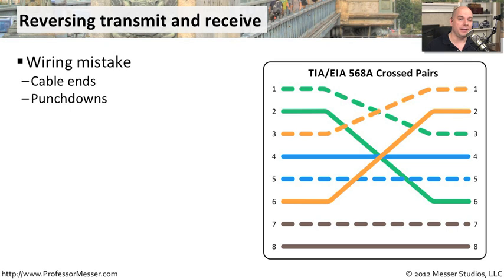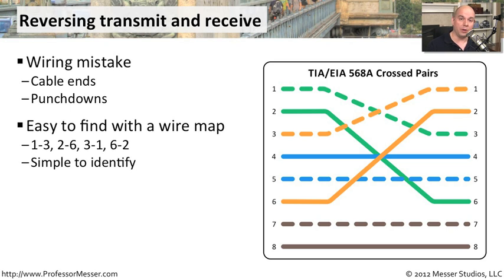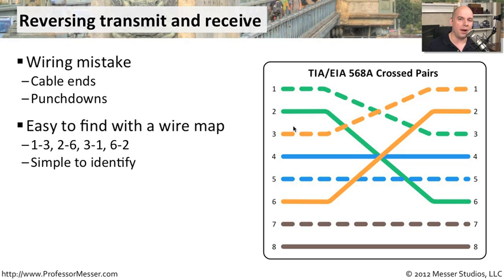If this is ethernet, that may not necessarily be a problem, because if you recall, this exact wire map is exactly what you would find if you were going to build a crossover cable for ethernet. Ethernet is very unique that way — it has the auto-MDIX capability that can automatically, in some cases, determine that that's a crossover cable and still use that cable properly.